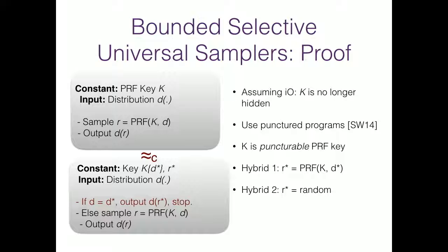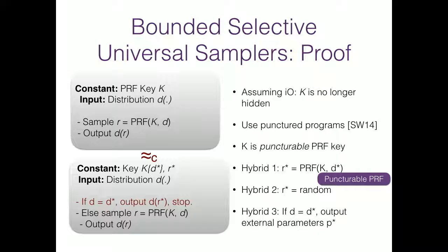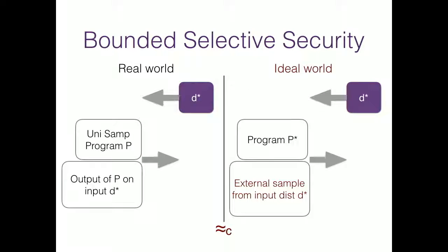Note that this program still does not output the external samples. To force the program to output external samples, one uses the security of the puncturable PRF to replace r* with a completely random value. Then in the next hybrid, because this program computes the distribution on a completely random value, this is exactly the same as outputting an external sample from the same distribution. So in the bounded selective setting it is relatively easy to construct a universal sampler scheme that generates samples from different distributions.